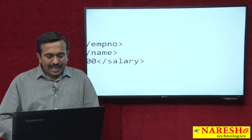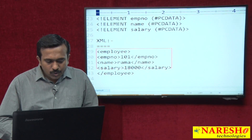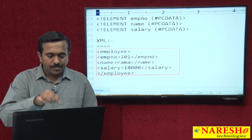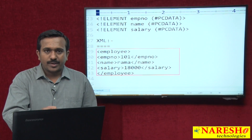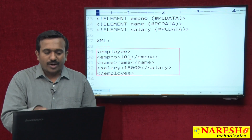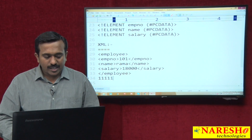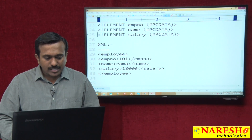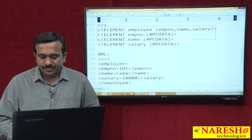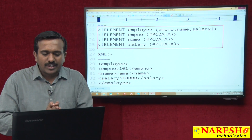XML elements are user-defined elements. Your employee, EMP number, name, and salary are user-defined elements, and their structure is being defined inside the DTD. So the XML elements structure is defined in the DTD.